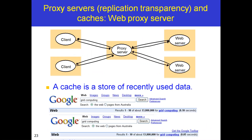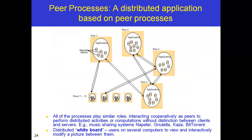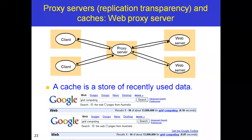In tomorrow's class, we will discuss proxy servers and peer processes. The process types covered are: client process, server process, peer process, and proxy. Thank you, students — same time tomorrow at 11:15 a.m.